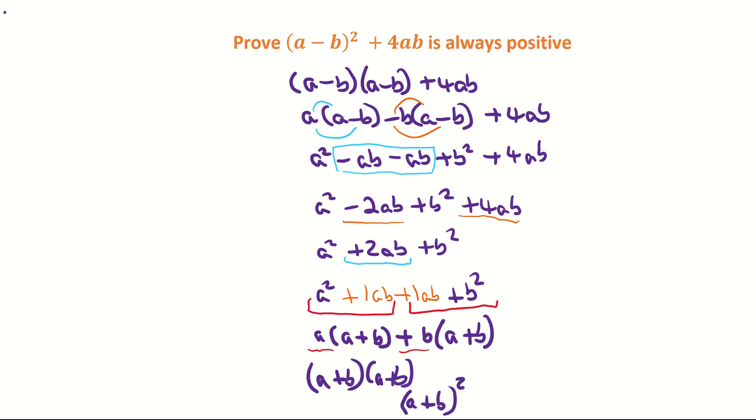We're finished now because the question wanted us to show why this is always positive. Anytime you square something, it's always going to give you a positive answer. So it doesn't matter if what's inside the bracket is negative, it's always going to give you a positive solution. That's it proved.